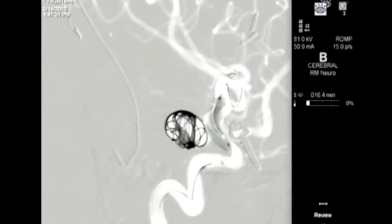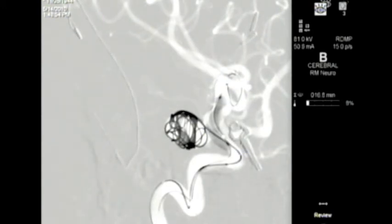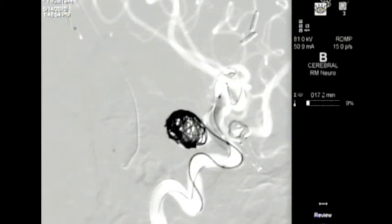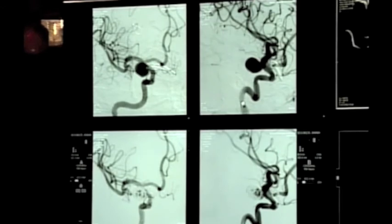You can see the end of the first coil going in right now. Again, the aneurysm is being sealed off from the normal artery using the balloon that's inflated across its neck. Here you can see a second platinum coil coming in through the microcatheter and being delivered into the aneurysm. There is still some residual filling within the aneurysm.